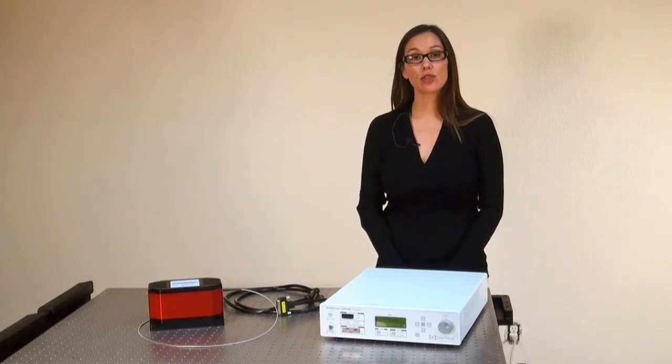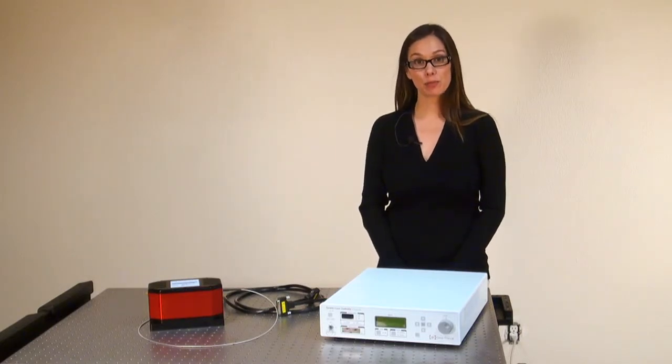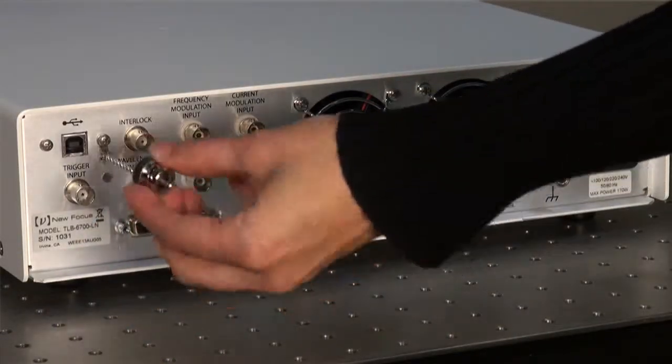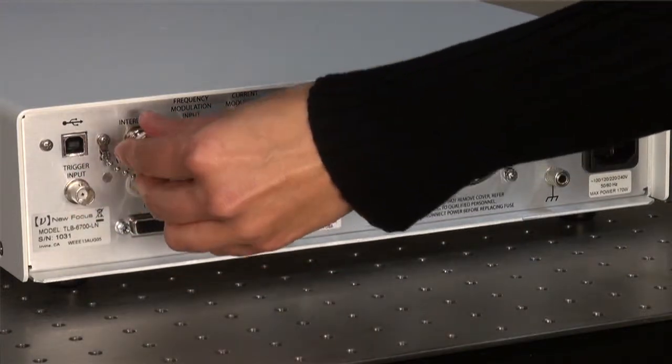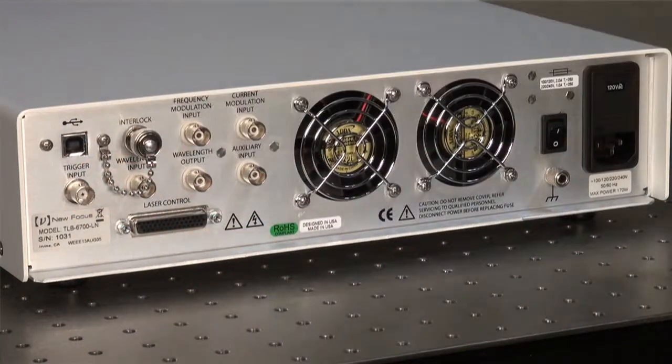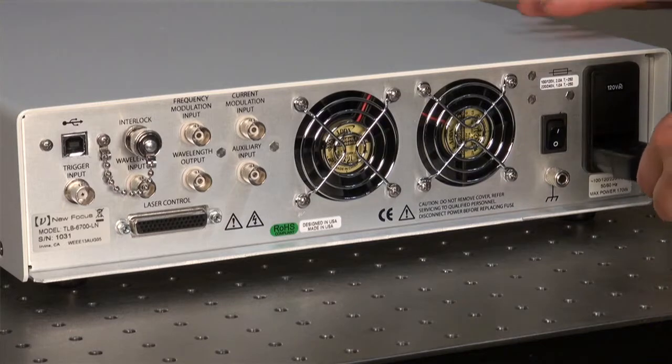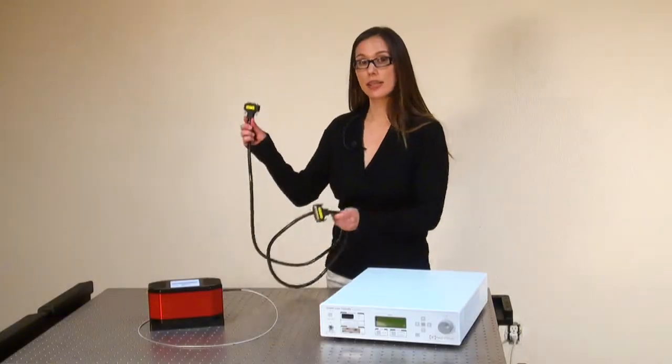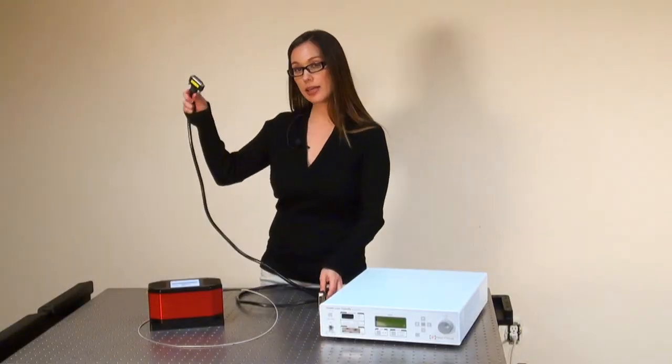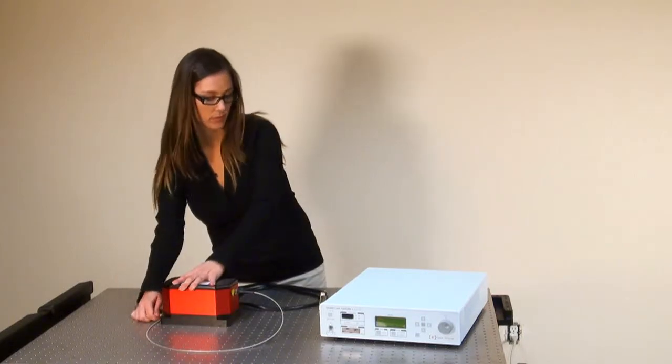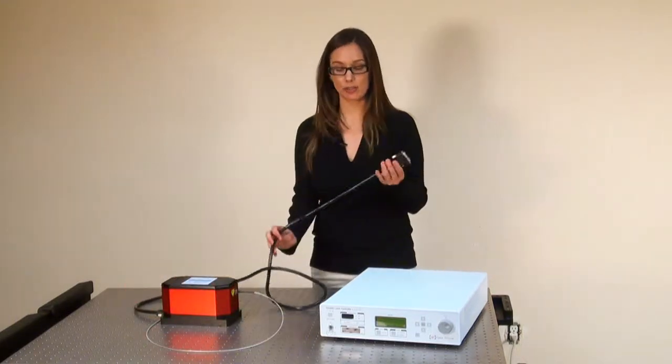To turn your laser on, ensure you have the proper fuses in place and that the interlock terminal is also in place. First, plug in the power cord. Second, take the laser cable and plug one end into the laser head and the other end into the back of the laser controller.